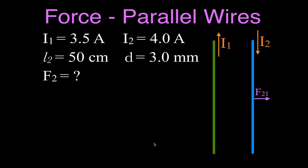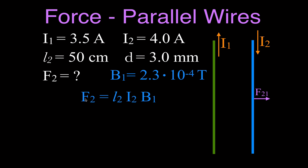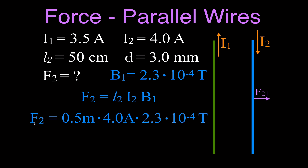Now we take that value and plug it back into the original force equation. The force on wire two equals I₂ times L₂ times B₁: that's 4.5 amperes, times 0.5 meters, times 2.3 × 10⁻⁴ teslas. The result is that the force on wire two from the magnetic field due to wire one is 4.7 × 10⁻⁴ Newtons, directed to the right.